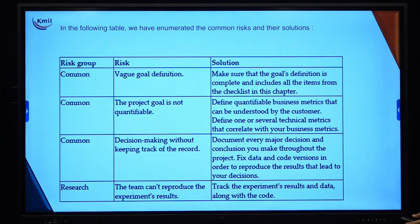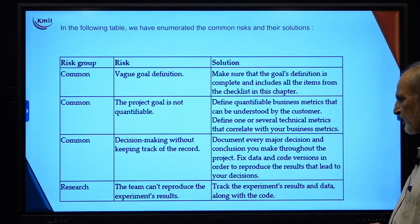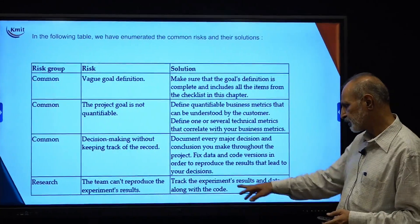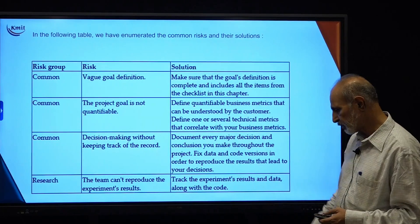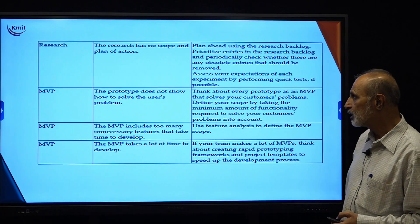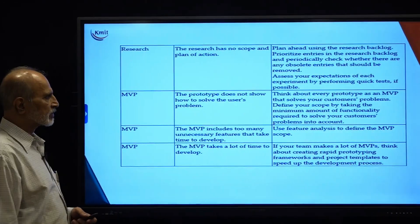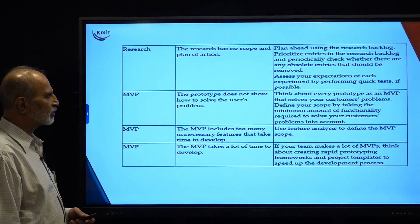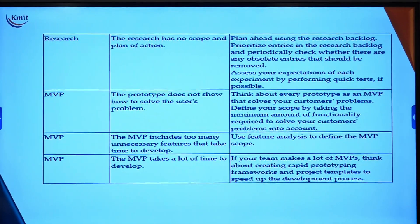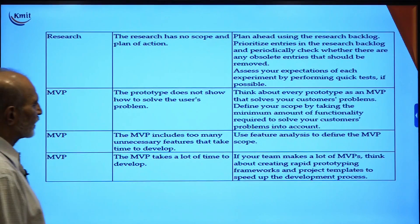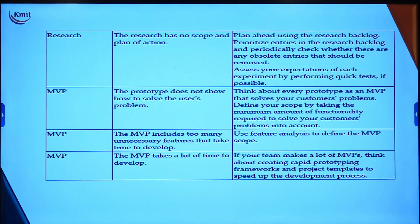Under the research category: the team cannot reproduce experimental results — the solution is to track experiment results, data, and code. Also, research has no scope or plan for action — the solution is to plan ahead using a research backlog, prioritize entries in the backlog, and periodically check whether there are obsolete entries that should be removed, and assess expectations.